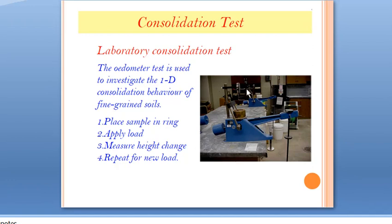This is the experimental or laboratory setup. There is a ring and the clay sample is placed in this ring. We apply a load on the top surface and measure the height change. The ring is placed in a water bath, so water is expelled through the soil, consolidation takes place, and there is a decrease in height measured using a dial gauge attached to the ring. We then repeat for a new load, doubling the previous one.